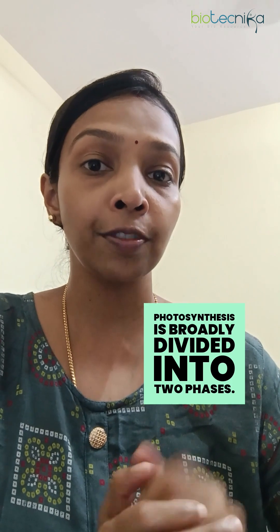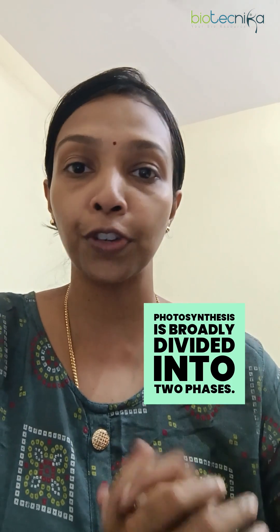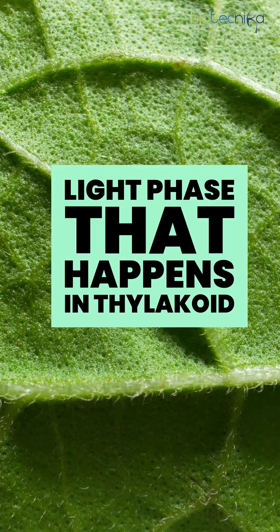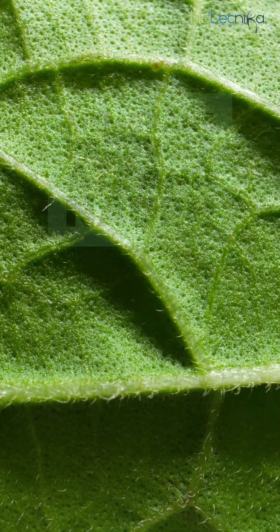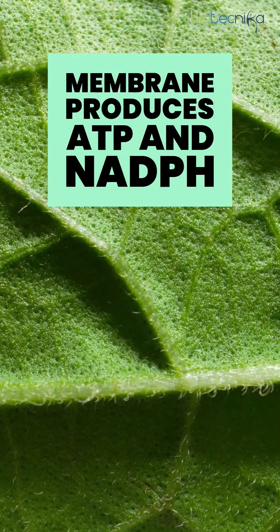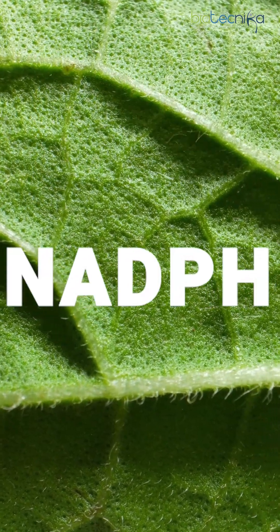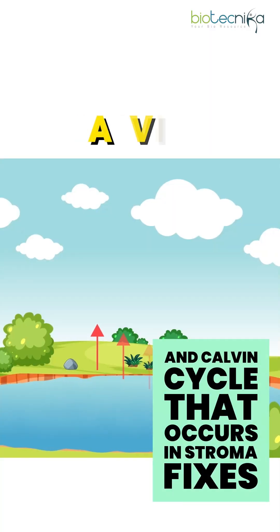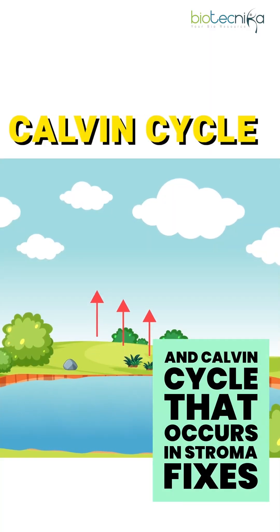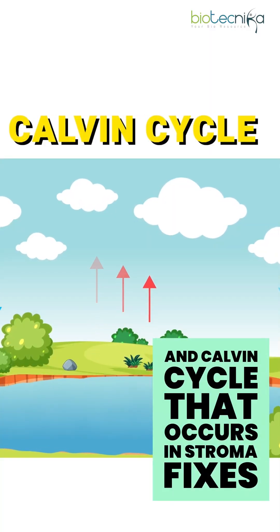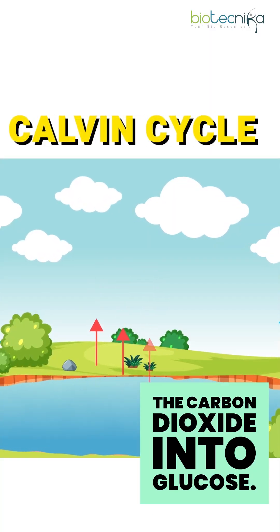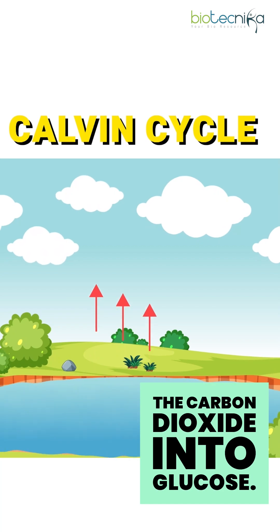Photosynthesis is broadly divided into two phases. The light phase, which happens in the thylakoid membrane, produces ATP and NADPH. The Calvin cycle, which occurs in the stroma, fixes carbon dioxide into glucose.